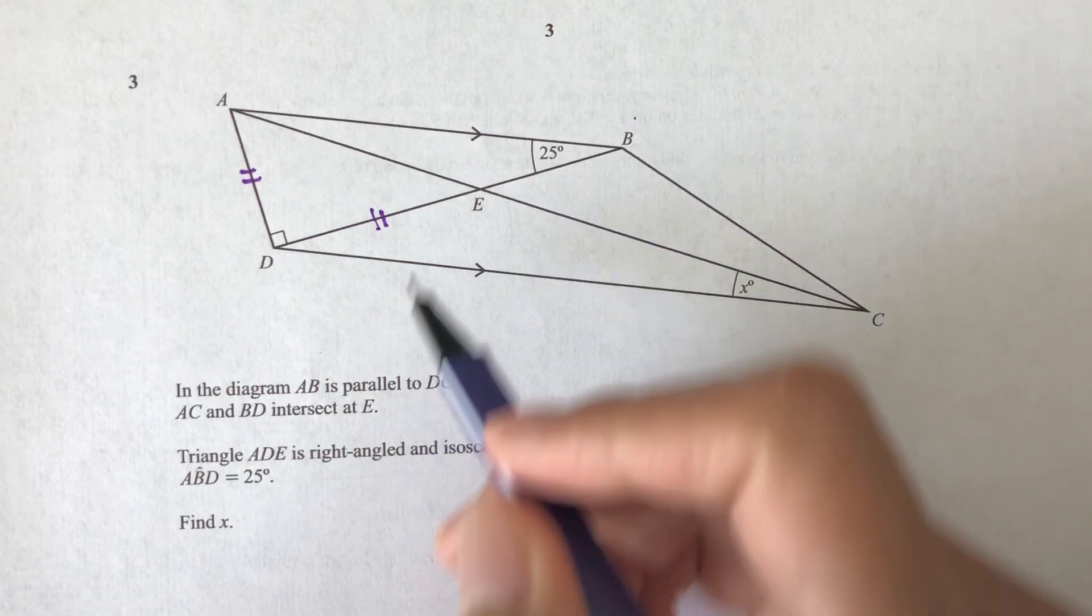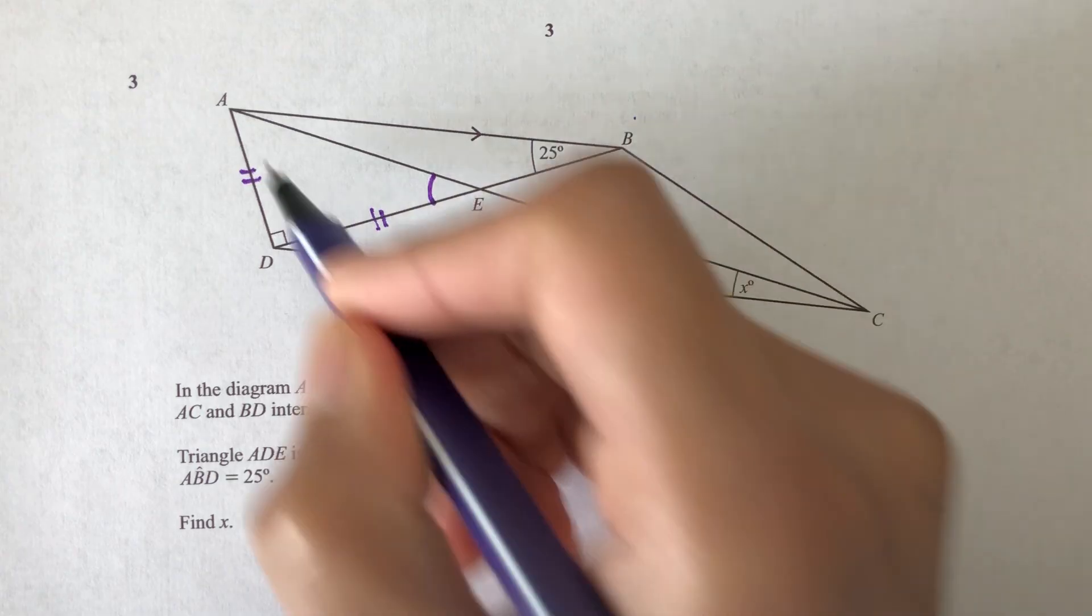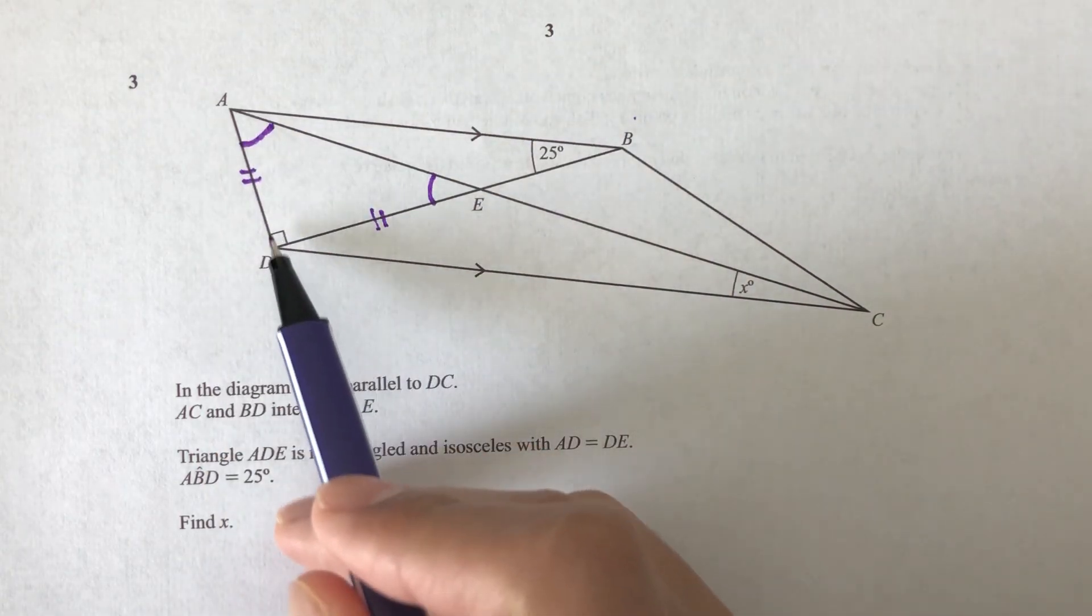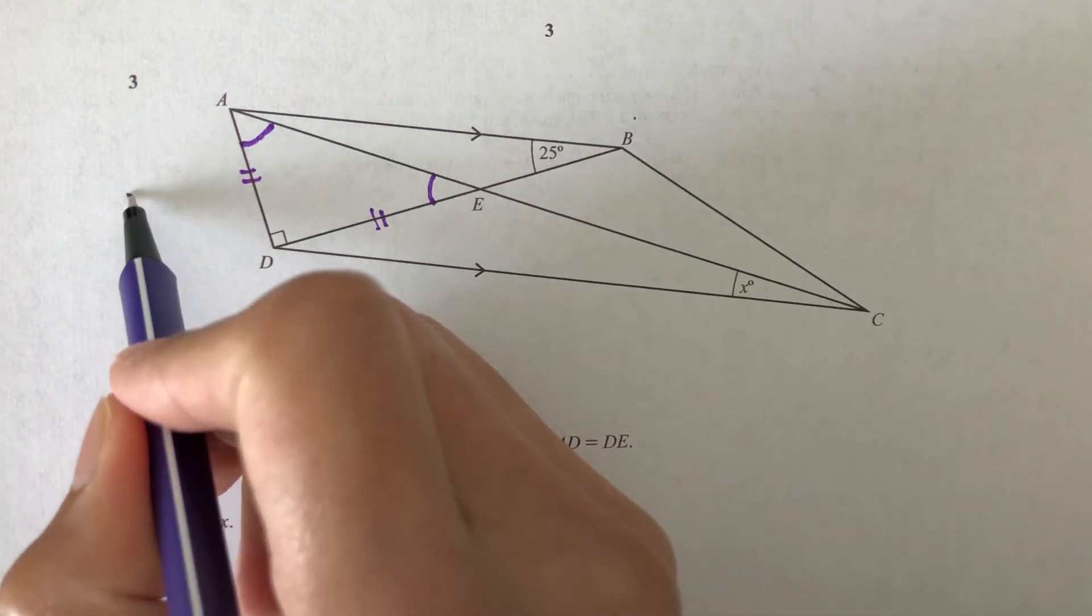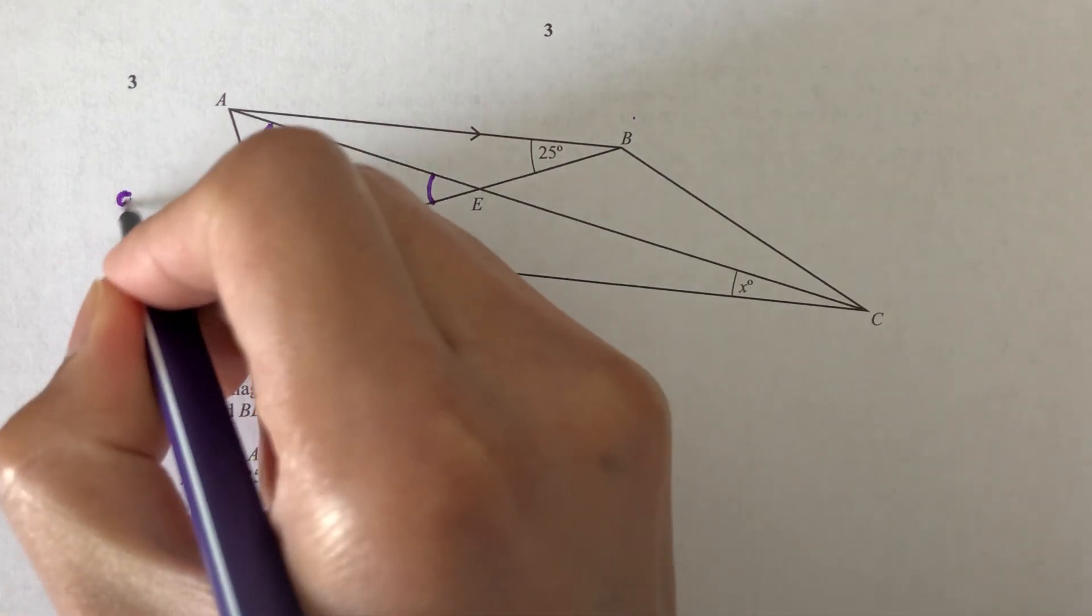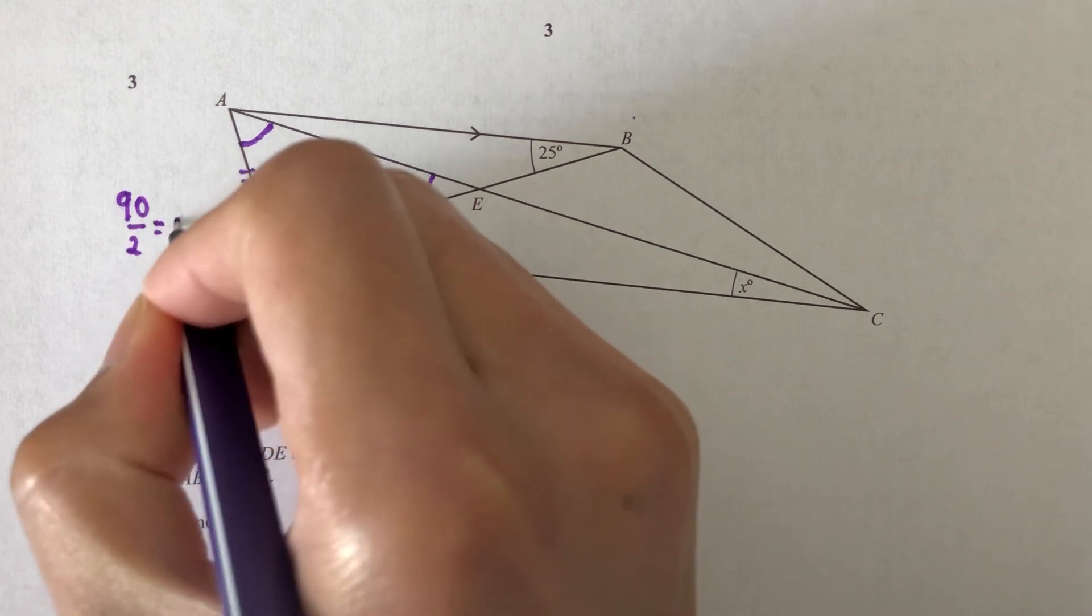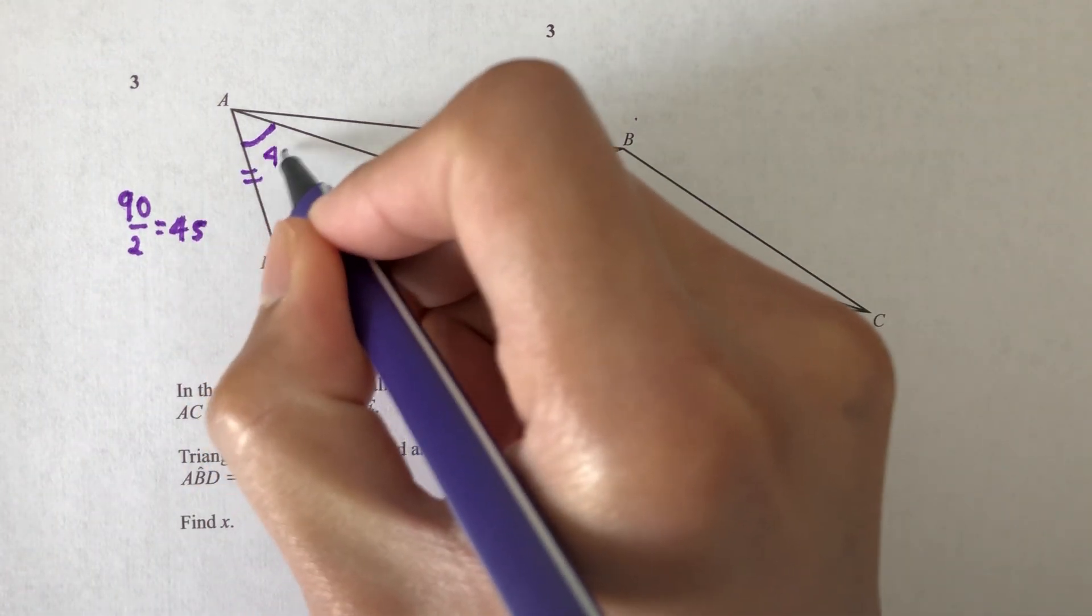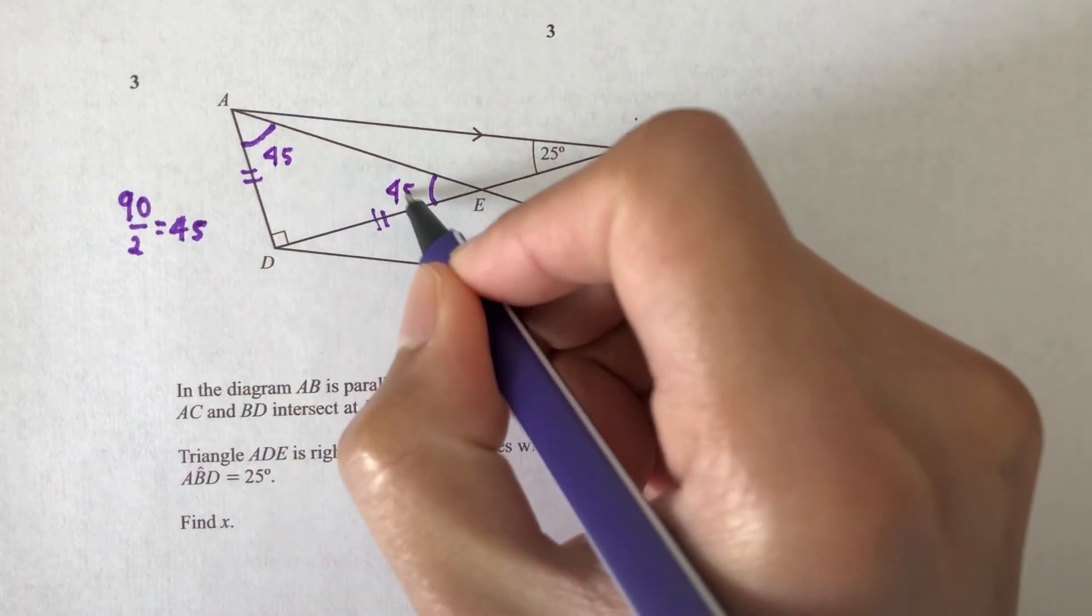So from this, what do we know? We know that this angle is the same as this angle. So let's find the angle. So this is 90. So remaining will be 90 divided by 2, which will be 45. So this angle is 45 and 45.